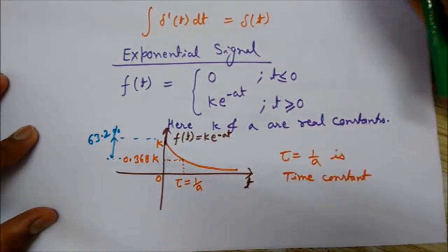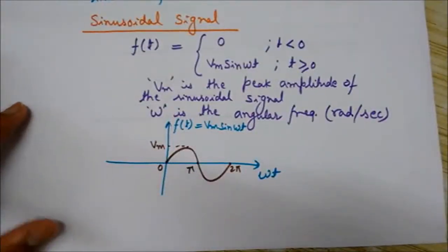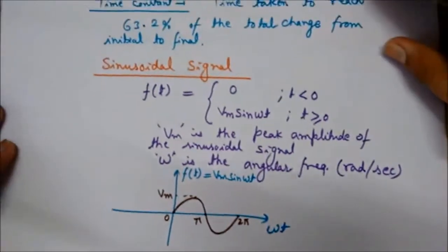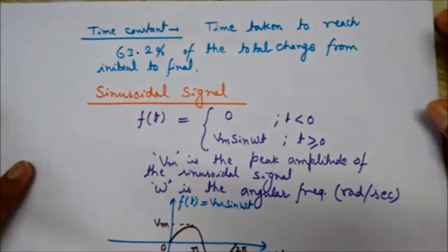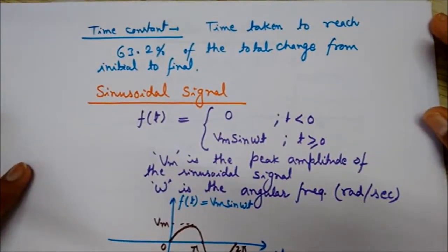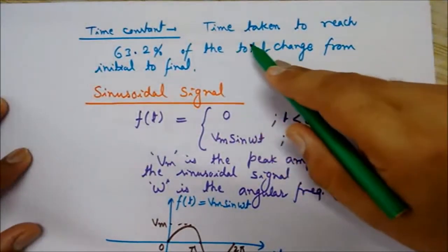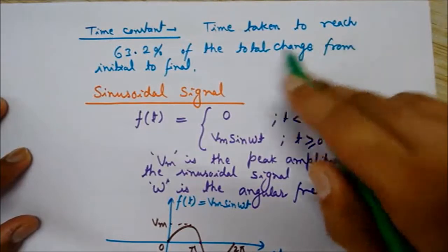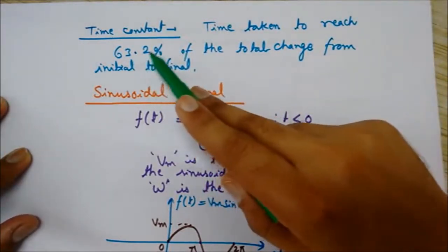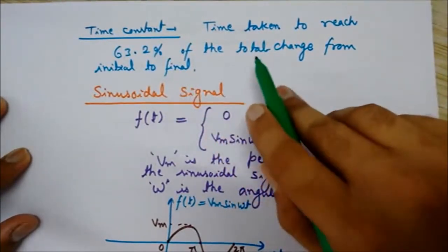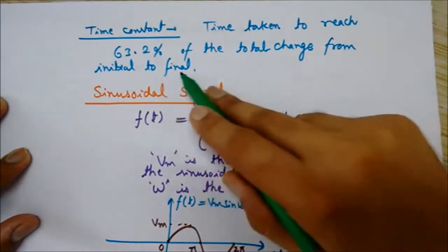What is time constant? Let me define this time constant first, then we will see this graph again. The time constant is the time taken to reach 63.2 percent of the total change from initial to final.